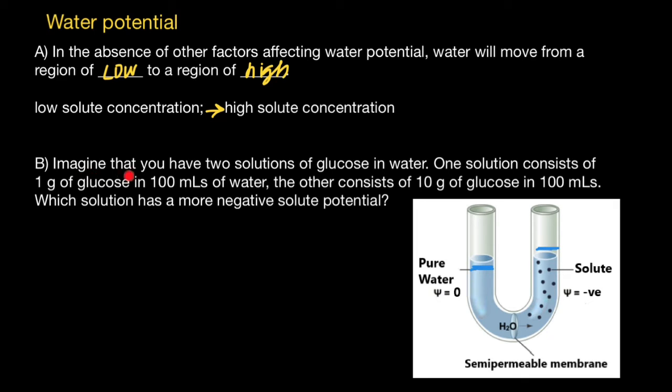Now, second question. Imagine that you have two solutions of glucose in water. One solution consists of one gram of glucose in 100 milliliters of water. The other consists of 10 grams of glucose in 100 milliliters of water, which solution has more negative solute potential.